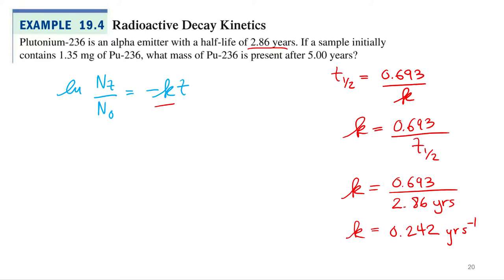All right, so now that we've got that, we can solve. What are we looking for? What mass of plutonium-236 is present after five years, so what variable in this? n sub t. So I've got to isolate the n sub t,